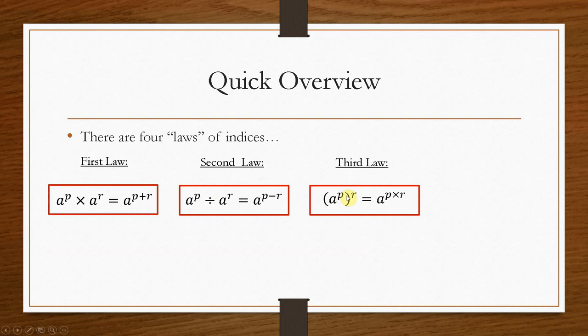Third law is a power of a power. So if you had, say, a to the power 2, to the power 3, that would be 3 times 2, which would give you a to the power 6.